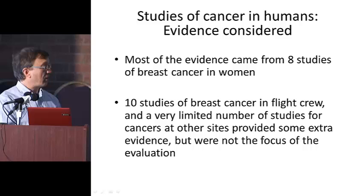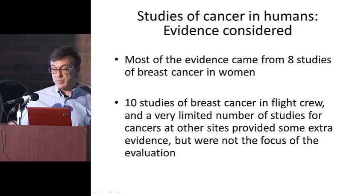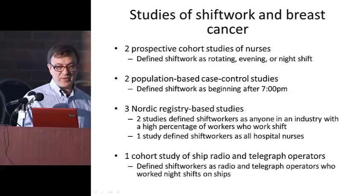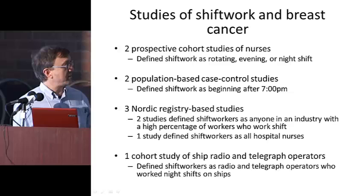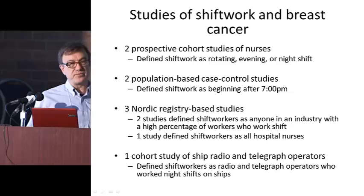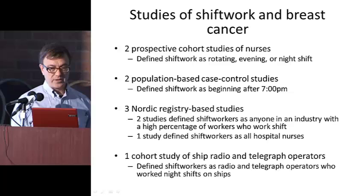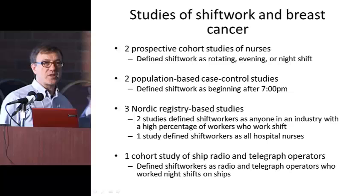For the human studies, a lot of the discussion revolved around eight studies of breast cancer in women, conducted either in the United States or the Nordic countries. I've listed the eight studies here just to give you an idea of what kind of studies we're talking about. You'll also see that how shift work was actually defined varied across the studies — and this is one of the challenges we faced in interpretation. These are eight studies done over about a ten or eleven year period.